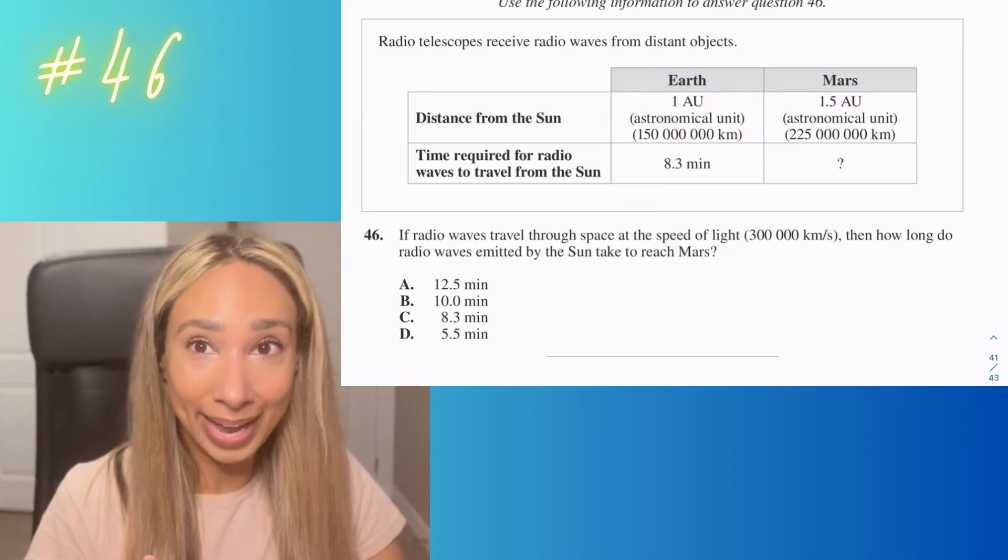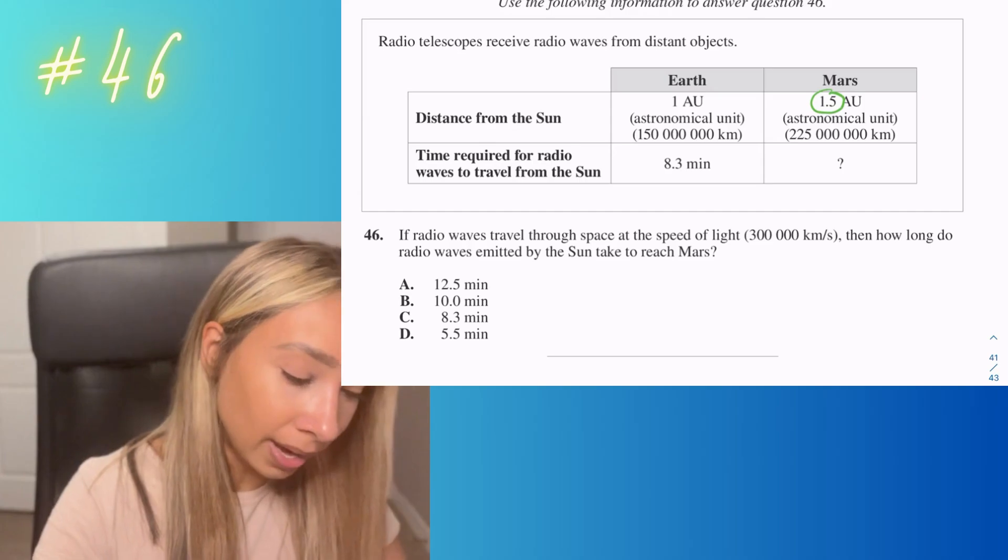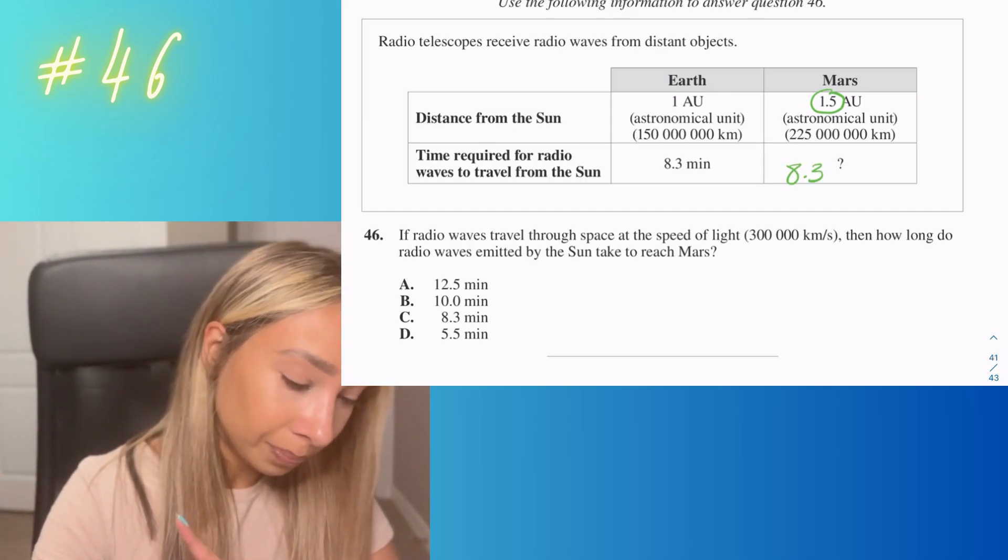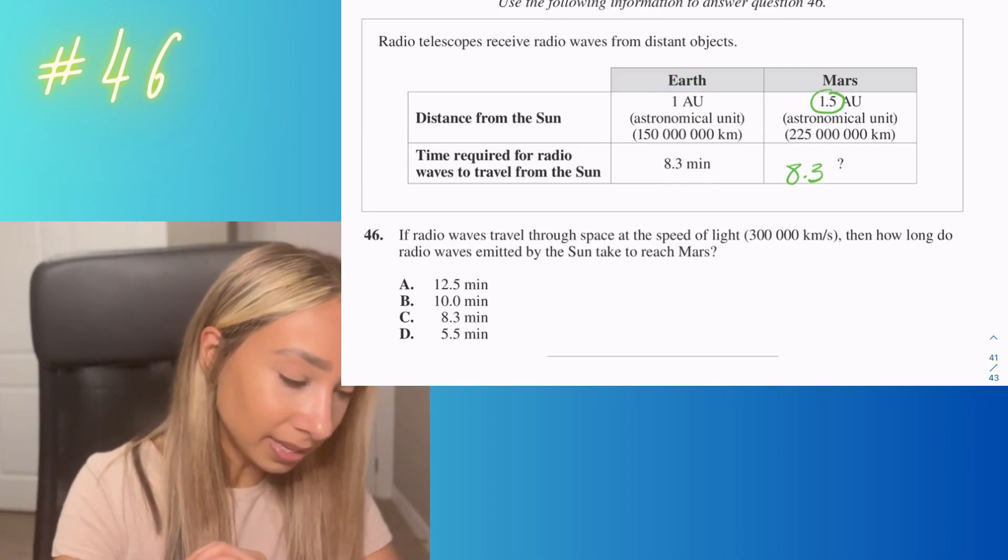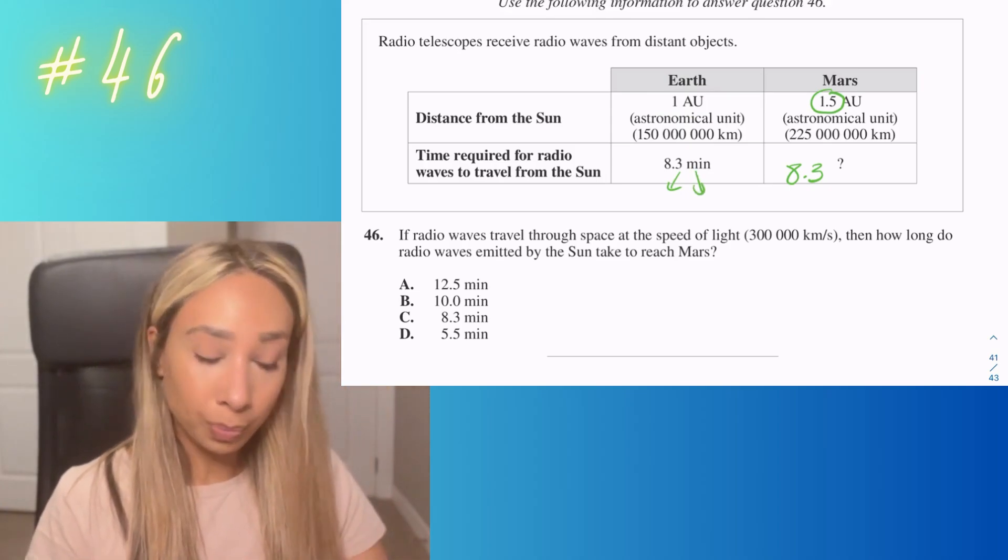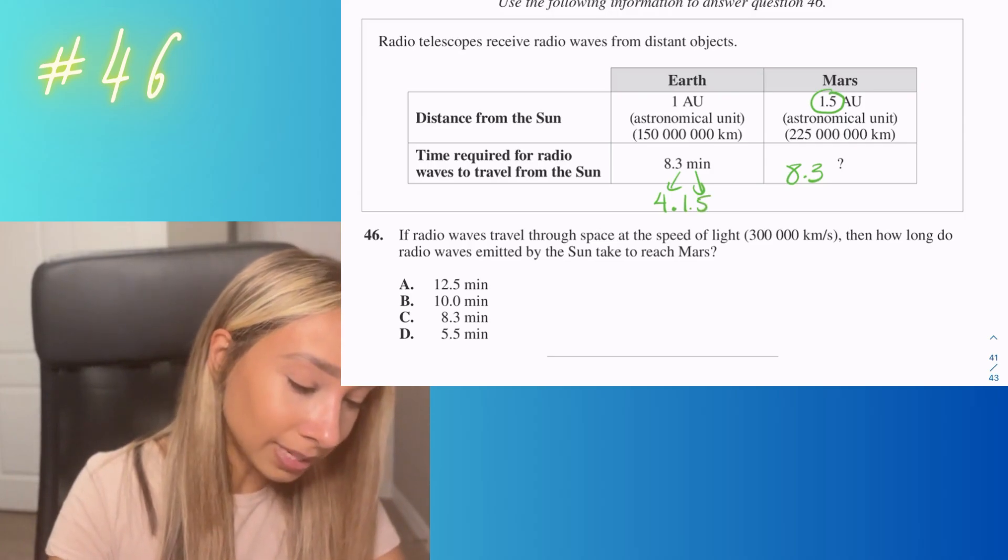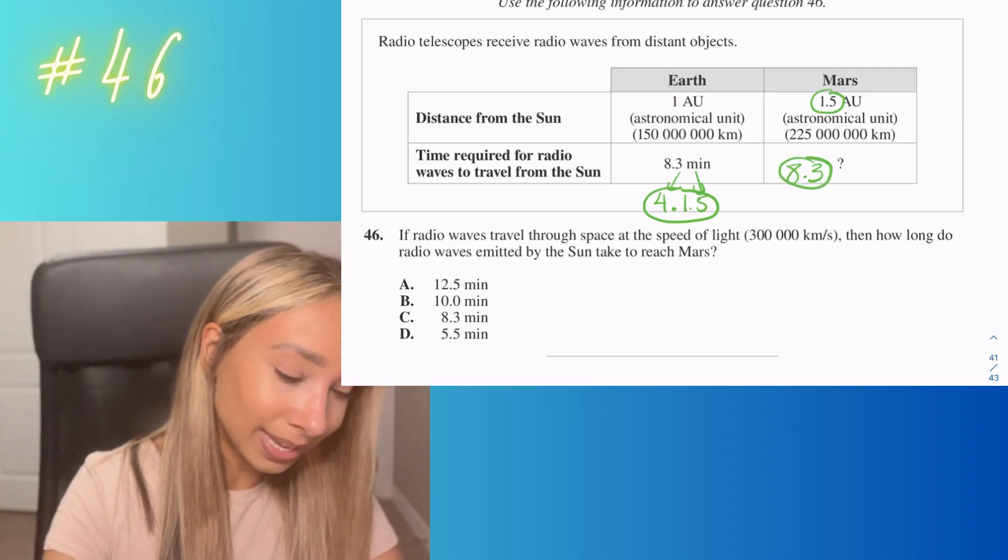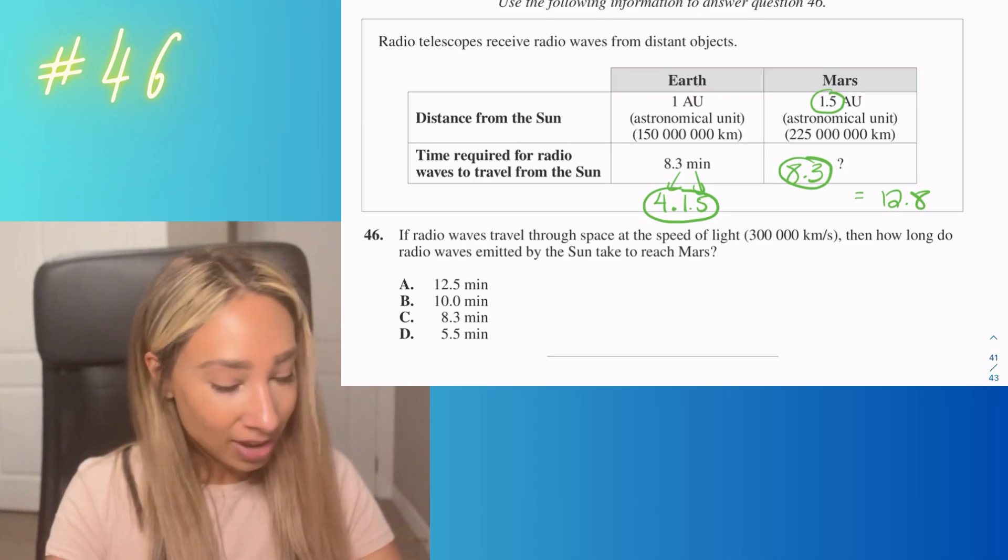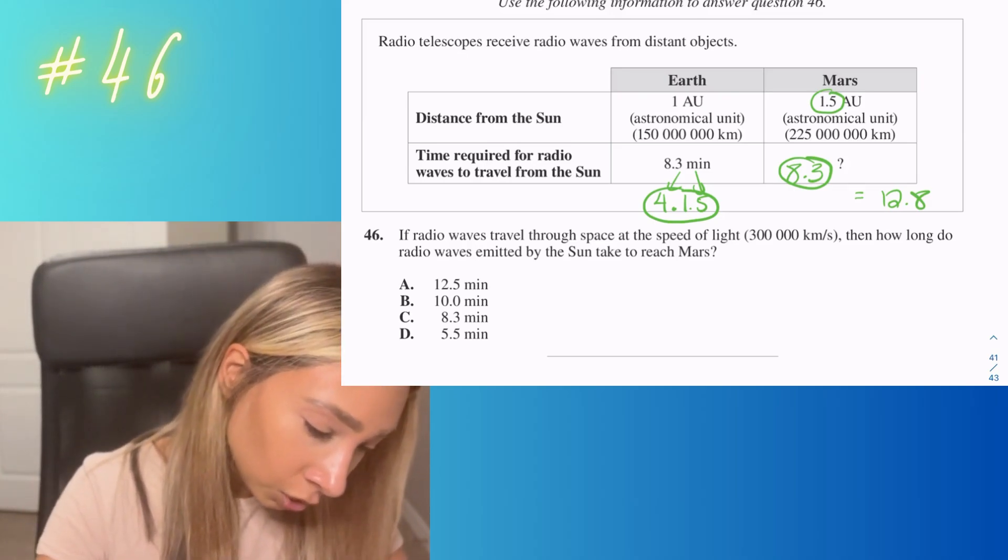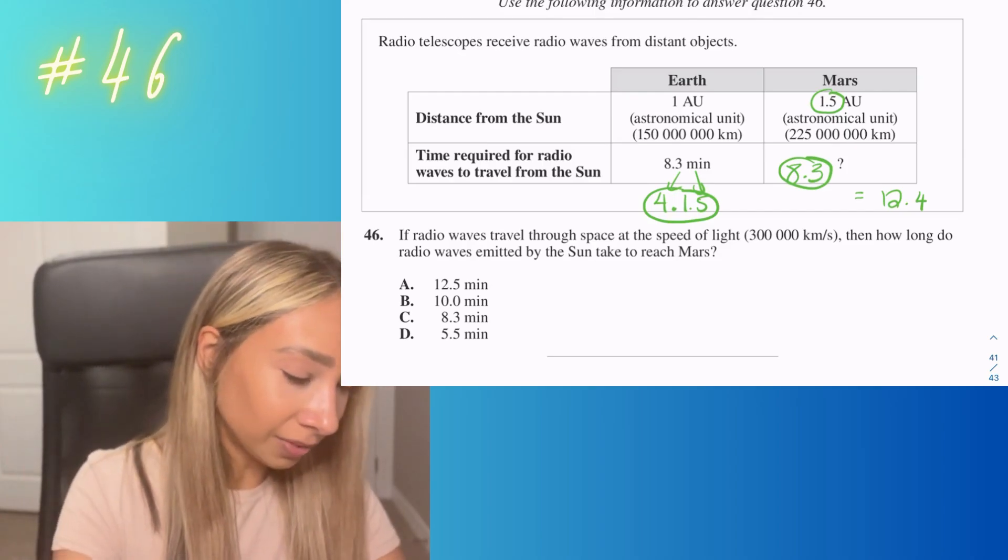Mathematically, you can use ratios. If 1 equals 8.3, we need to find what 1.5 equals using the same ratio. With 1.5, we know one unit is 8.3, so now we figure out what 0.5 is. 0.5 is half, so I split 8 into 2, which gives me 4. Then 0.3 split into 2 gives me 0.15. So 4.15 plus 8.3 gives me 12.45, and they probably round to 12.5. The answer is B.